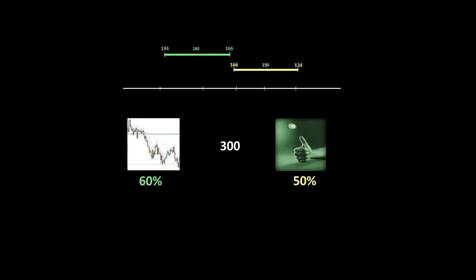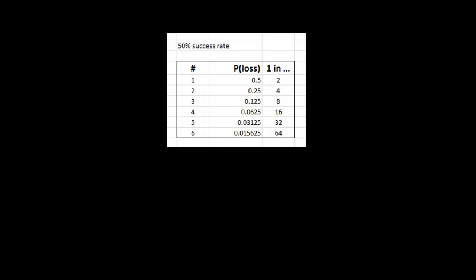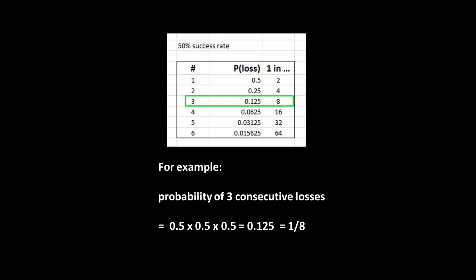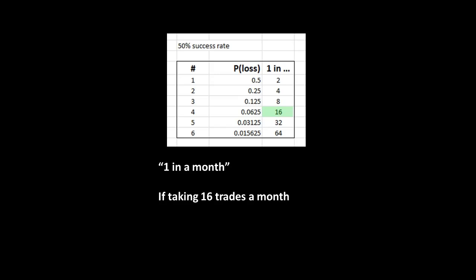That's a problem when I want to monitor my success rate month on month. So what I've decided to do is turn the whole process on its head and look at the probability not of winners, but of losers. I have a table here which looks at the number of consecutive losses — this is for a 50% success rate strategy, just like flipping a coin. For example, the chance of getting heads three times in a row is one in eight: half times half times half. If I have 16 trades in a month, the one-in-16 outcome corresponds to four consecutive losses. So four consecutive losses would be a one-in-a-month event for a 50% success rate.